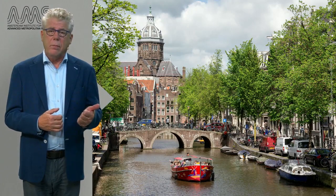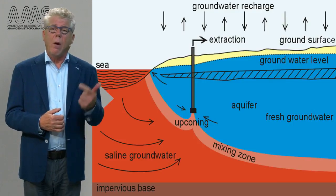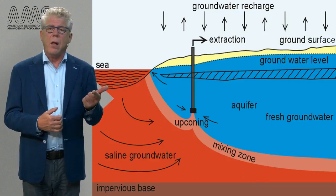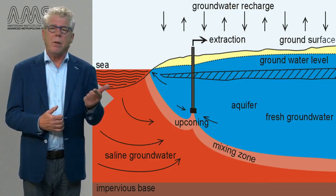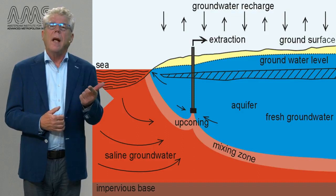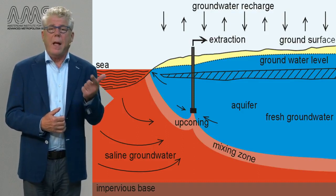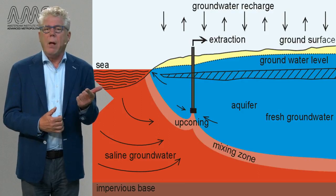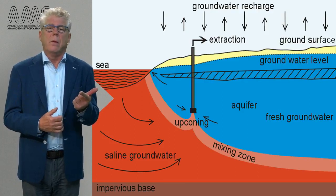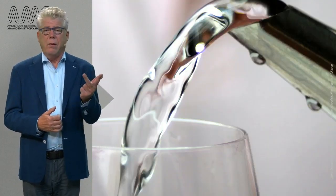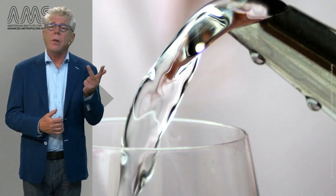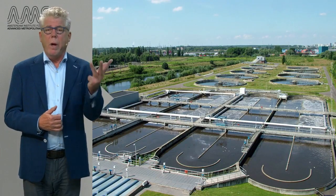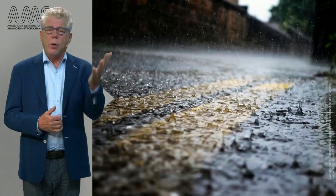Surface water, ground water — this is water that we generally do not see since it is in the subsurface. It can be fresh, indicated here in blue, or salt, indicated here in brown. Drinking water, which is produced from either surface water or ground water. Waste water and storm water.